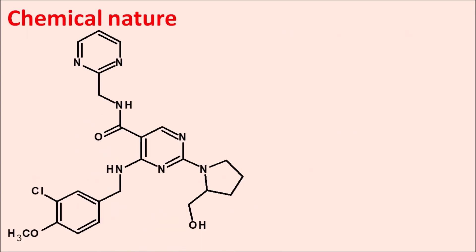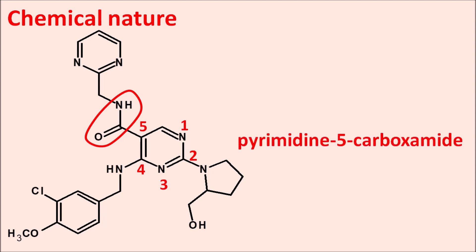Now let us look at the chemical nature of this drug. This is the structure of avanafil. The principal functional group is the carboxamide. This carboxamide is attached to the pyrimidine ring system. Giving numbering to the pyrimidine ring system — positions 1, 2, 3, 4, and 5 — the amide is attached at the fifth position.